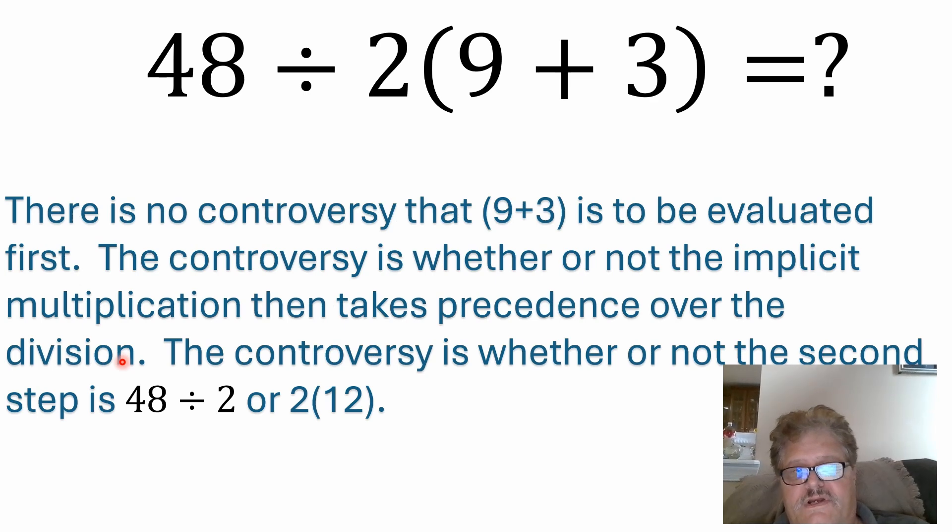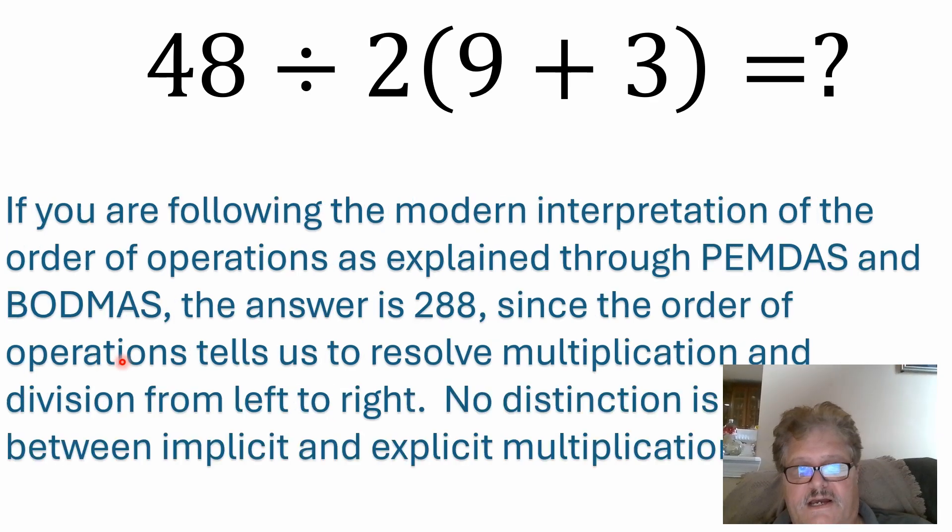You know, there's no controversy that the first thing that we solve here would be the 9 plus 3. You evaluate that first. The controversy comes in as to whether or not the implicit multiplication then takes precedence over the division. The controversy is whether or not the second step would be 48 divided by 2 or 2 times 12. So that's really the controversy here.